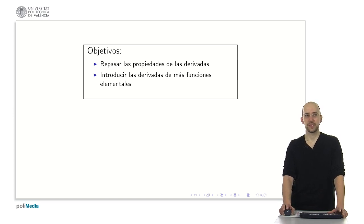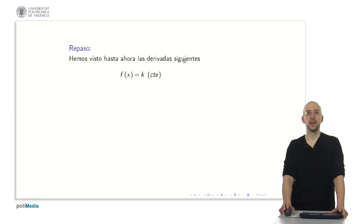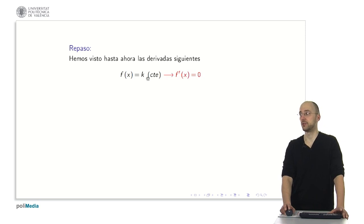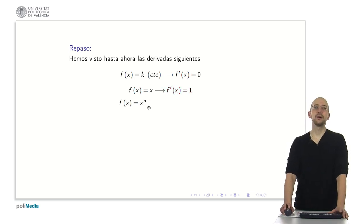The requirements are quite simple: to know how to operate with powers, to know how to work with rational numbers, and to know the elemental functions. You also need the derivatives of three functions. The derivative of a constant function is always 0. The derivative of x is 1, and the derivative of x raised to the power of n is n times x raised to the power of n minus 1.